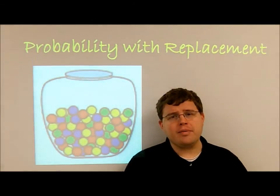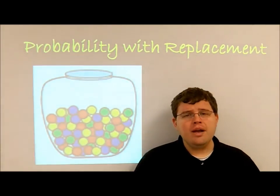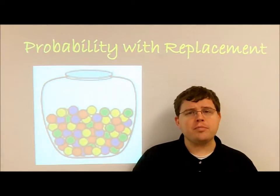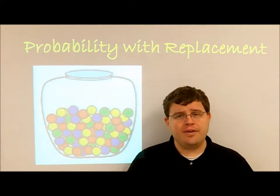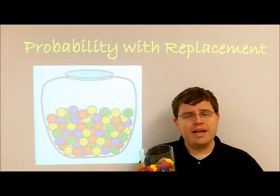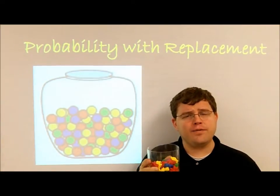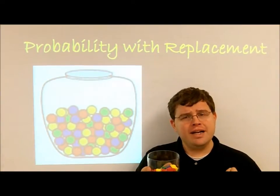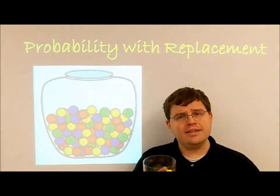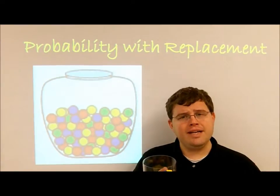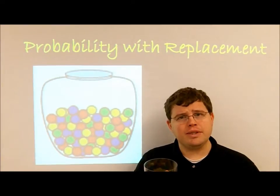Let's talk about probability with replacement. Probability with replacement is actually very simple. Here I have a jar that contains 40 bears: 10 red, 10 green, 10 yellow, and 10 blue.